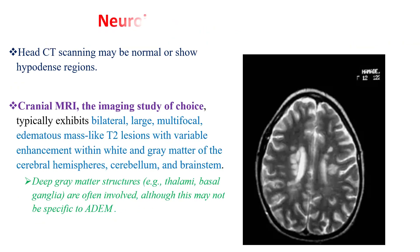Regarding neuroimaging, brain CT is often sent first to exclude meningitis or CNS infection, but head CT may be normal or may show hypodense regions. Cranial MRI is the imaging modality of choice, typically showing bilateral, large, multifocal, edematous cloud-like lesions with variable enhancement within the white and grey matter of the cerebral hemispheres, cerebellum, and brainstem.